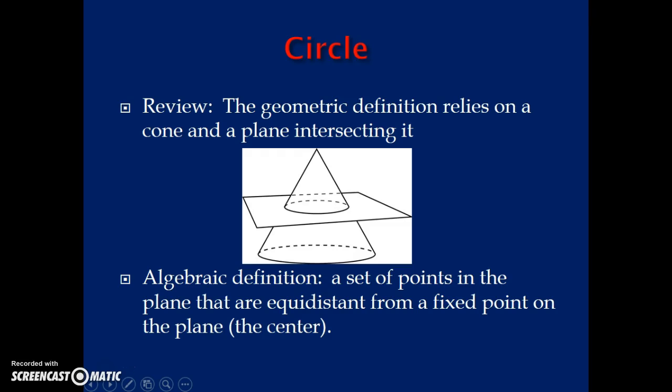So let's start by talking about the circle. We'll preview why the circle is considered a conic section. In geometry, the definition of the circle relies on a cone and a plane that's intersecting it, intersecting in such a way that it forms a circle. The base of the cone and the plane are parallel to one another, and when that plane intersects the cone, that conic section is a circle.